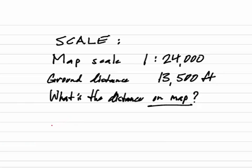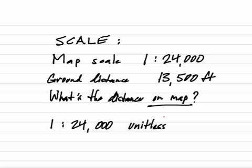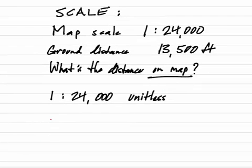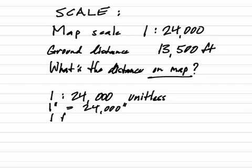First of all, I'm going to convert 1 to 24,000. 1 to 24,000 is unitless. Therefore, that means 1 inch equals 24,000 inches, or 1 foot equals 24,000 feet.